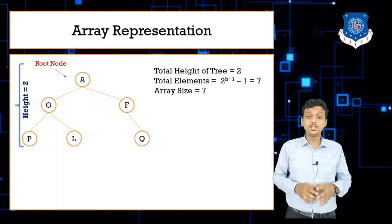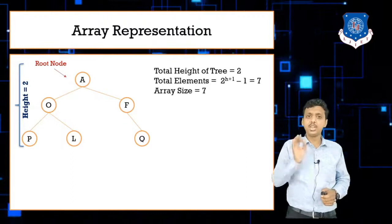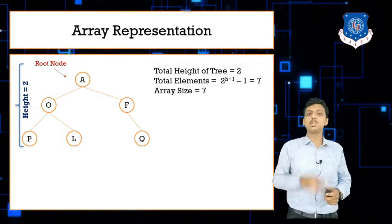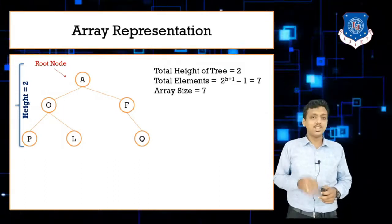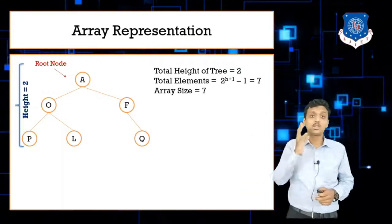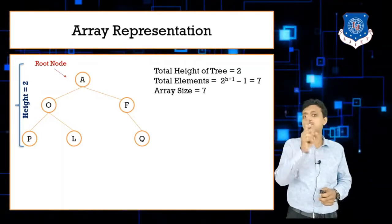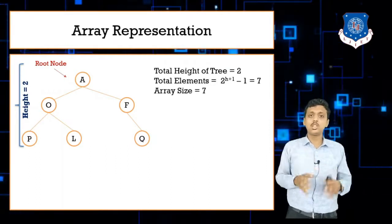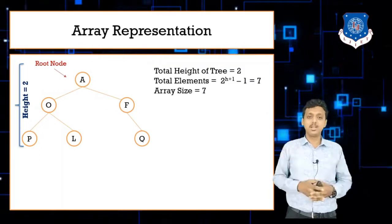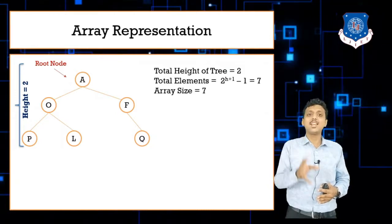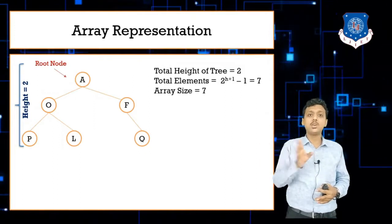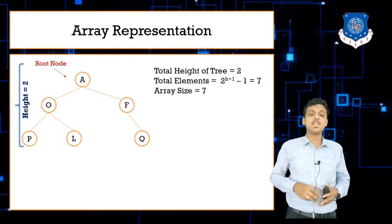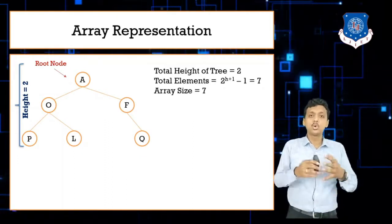When the height is two, the maximum number of nodes is calculated using the formula 2 raised to (h+1) minus 1, which gives 2 raised to 3 minus 1 equals 7. So the array size must be 7. Since arrays are fixed-size data structures, you must define the maximum size upfront.